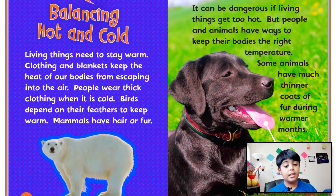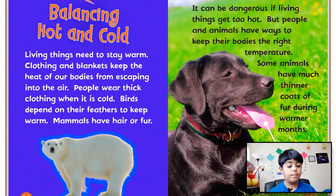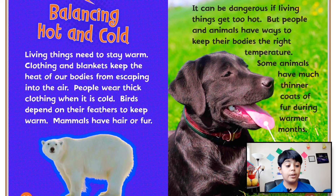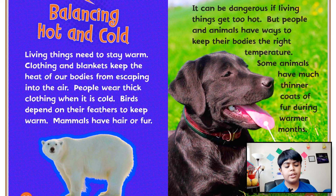Chapter five: Balancing hot and cold. Living things need to stay warm. Clothing and blankets keep the heat of our bodies from escaping into the air. People wear thick clothing when it is cold. Birds depend on their feathers to keep warm, and mammals have hair or fur. It can be dangerous if living things get too hot, but people and animals have ways to keep their bodies at the right temperature.